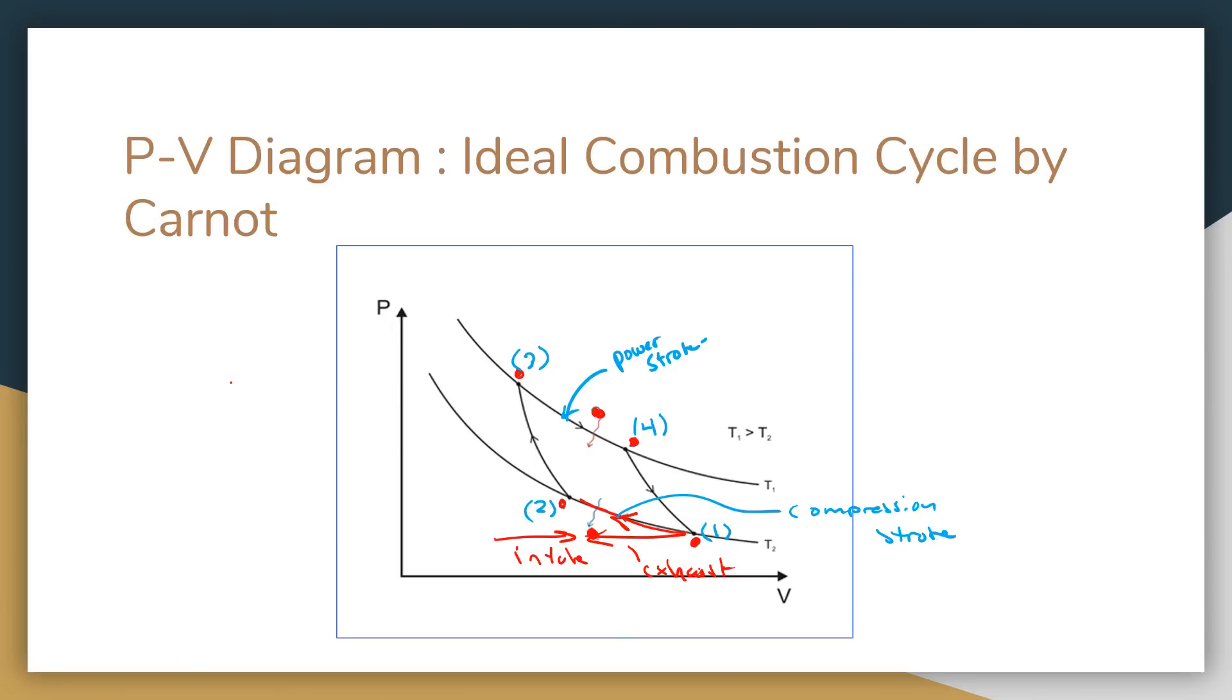All right. And then we're actually going to have our Q out, which will be right through here. That'll be our Q out. And this will be our Q in. And so we'll take you through the process from our one to two. We actually have an intake and exhaust before we hit our step one, and then we move to two and then three, and then our power stroke from three to four from our combustion.